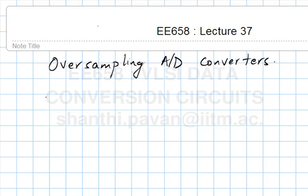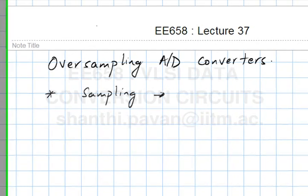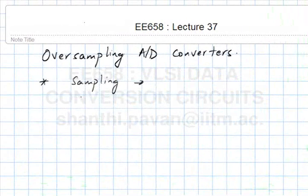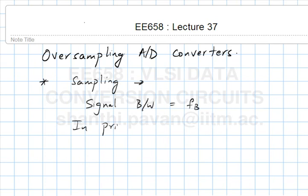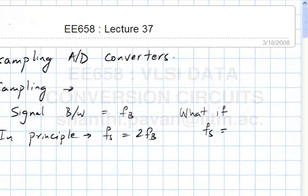Let me quickly review sampling first. If you have a signal of bandwidth FB, then by Nyquist you need at least a sampling rate of 2FB. The question is what happens when you oversample by a large factor. In other words, let us say the signal bandwidth is FB. In principle you need Fs to be only 2FB. What if Fs is some large factor, say OSR times 2FB?